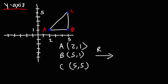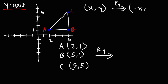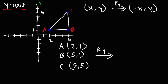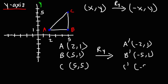We're going to reflect these three points across the y-axis. When we reflect (x, y) over the y-axis, the y-values stay the same but the x-values will change, so (x, y) becomes (-x, y). All we have to do is change the sign of the x-values. So the new A prime is (-2, 1), B prime is (-5, 1), and C prime is (-5, 5).